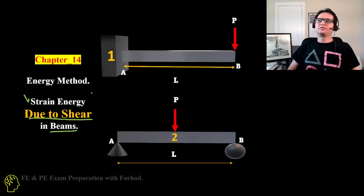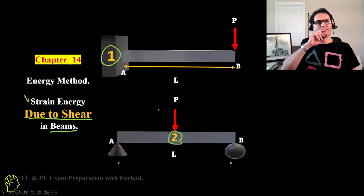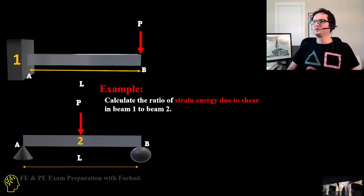We have two beams: one is a cantilever with length L with a concentrated load applied at the free end, and the other is a simply supported beam handling a concentrated load at its center. We want to calculate the ratio of strain energy due to shear in beam one to beam two.